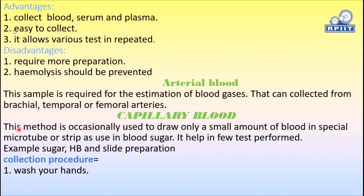Capillary blood: This method is used to draw only a small amount of blood, collected in special microtubes. It is used for tests like blood sugar. Typically, three to five drops of blood are collected using the finger prick technique.